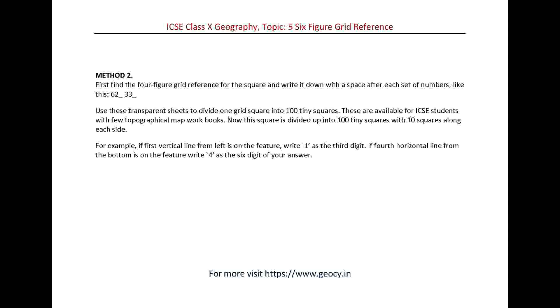For example, if 1st vertical line from left is on the feature, write 1 as the 3rd digit. If 4th horizontal line from the bottom is on the feature, write 4 as the 6th digit of your answer.